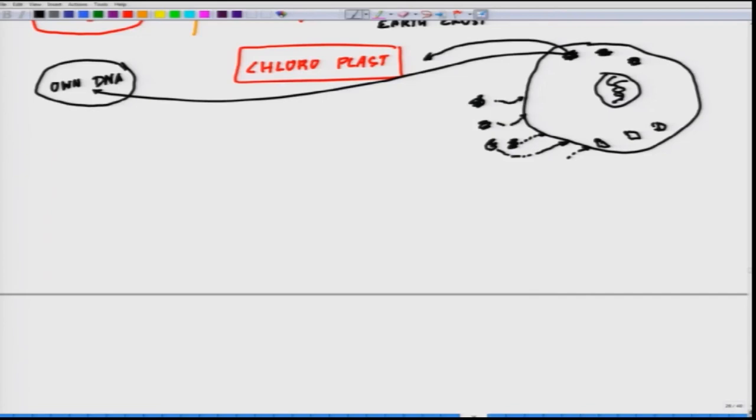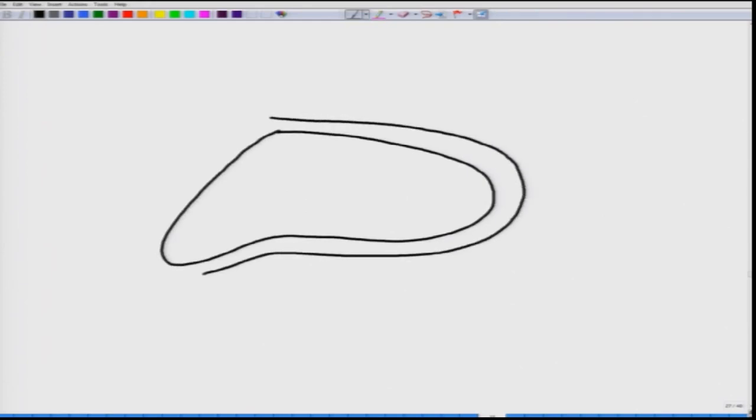Now, how this looks like if you look at the structure of the chloroplast in nature. So, the chloroplast is something like it is a double membranous structure and something like this. This is the cross section I am drawing of chloroplast.